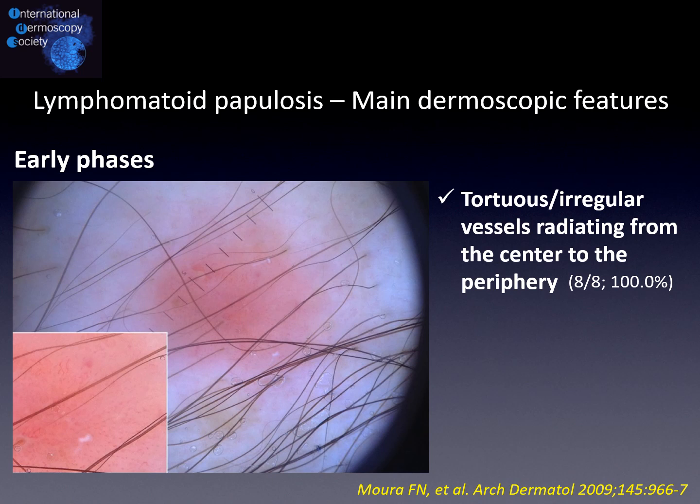Let's move to lymphomatoid papulosis. It is important to underline that the dermoscopic picture of this condition remarkably varies according to the disease stage. On the basis of the larger study on the topic, the main dermoscopic clue in early phases is represented by tortuous irregular vessels radiating from the center to the periphery, even though it is not uncommon to come across dotted vessels distributed in a diffuse or sparse way.